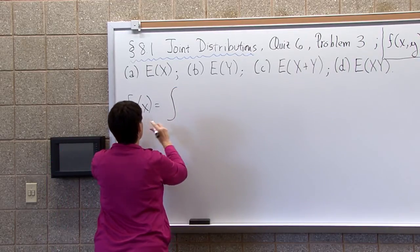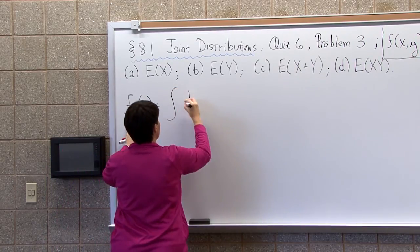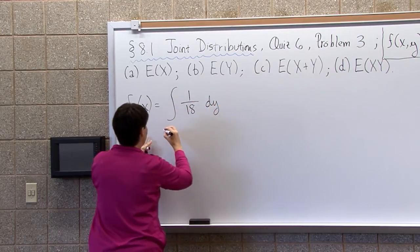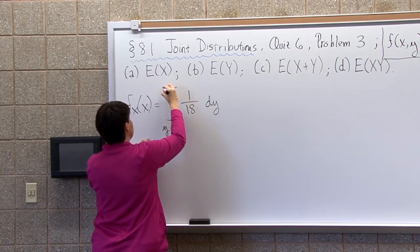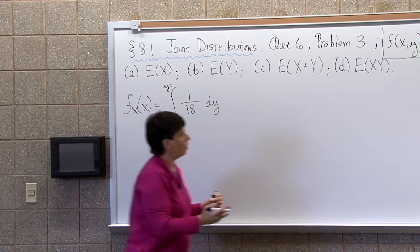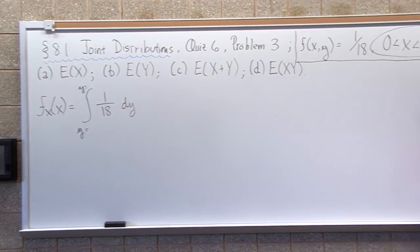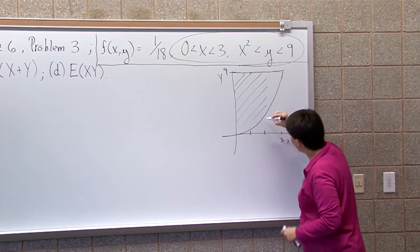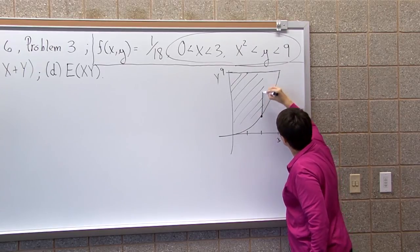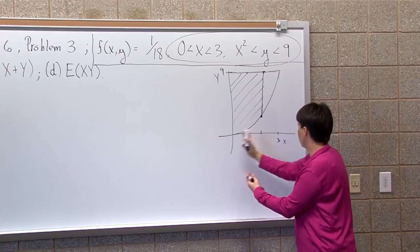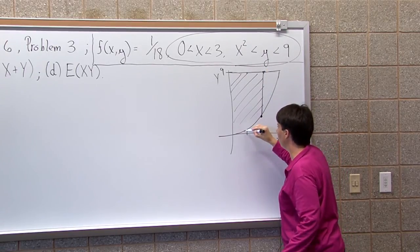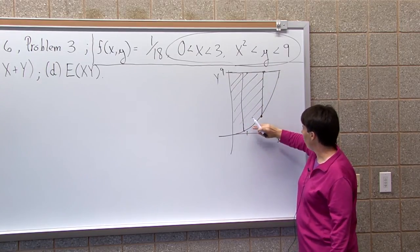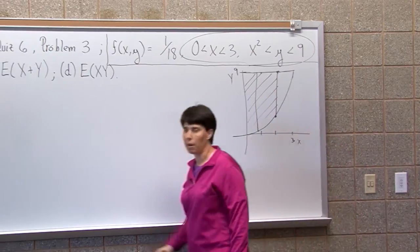I'm integrating the joint over my y's. Y's are going to go from something to something. If I go over here, my x's are ranging from 0 to 3. If I choose any x in that interval, y goes from here to here. Choose any x in here, y's go from here to here. Over 0 to 3, y's are going from x squared to 9. So those are my bounds.